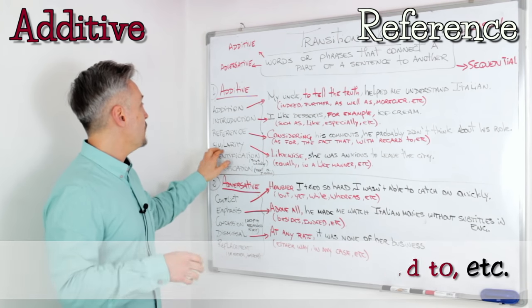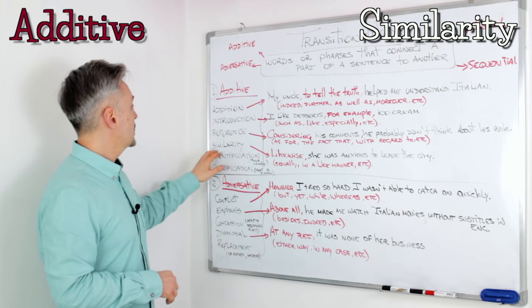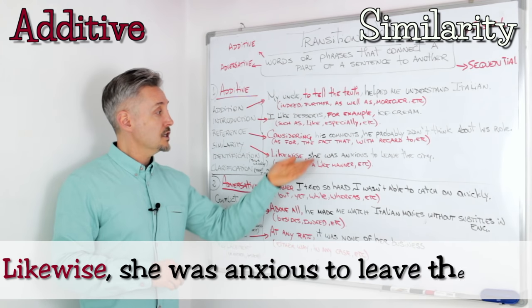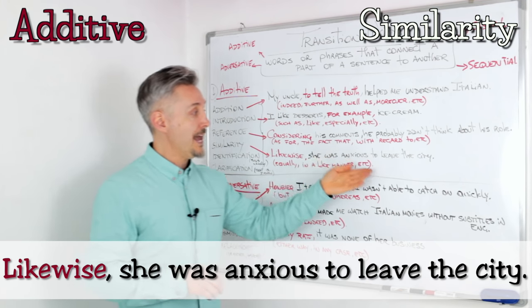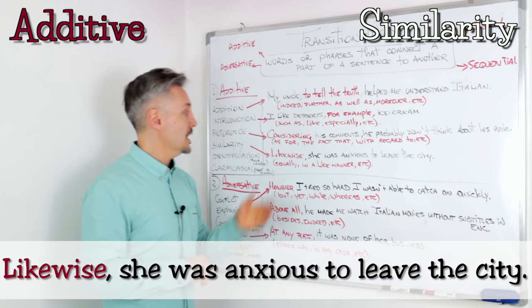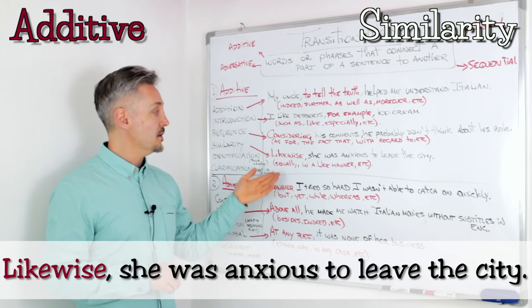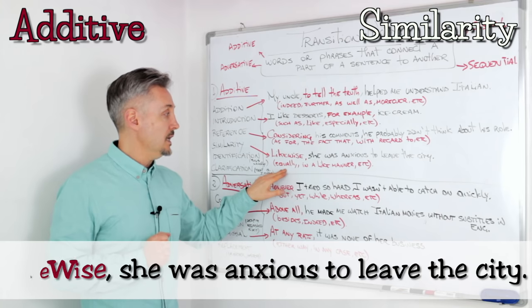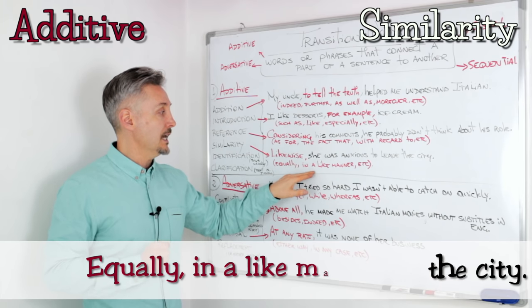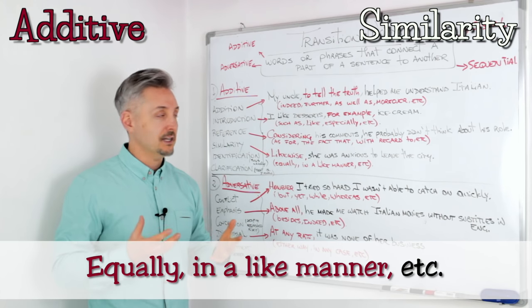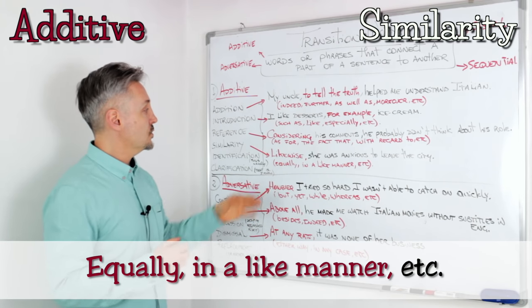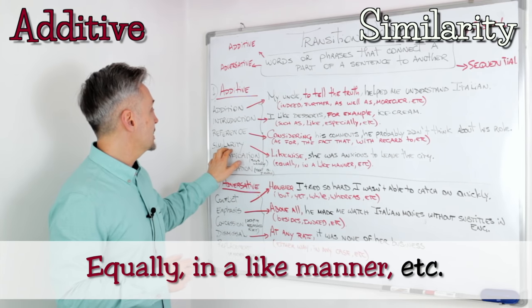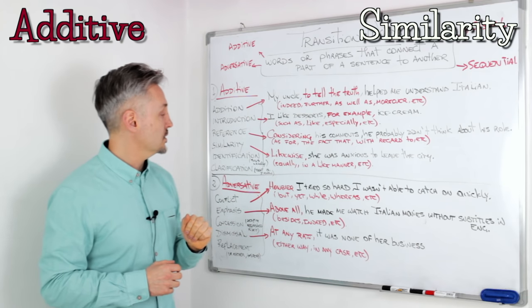The fourth subgroup is similarity. For example: 'Likewise, she was anxious to leave the city.' 'Likewise' is like 'equally' or 'in a like manner,' etc. These are all types of similarity transition words.